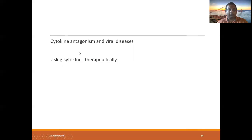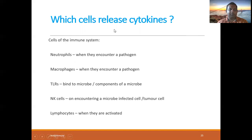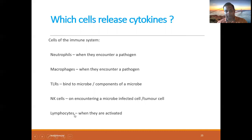Cytokine antagonism plays a role in viral disease, and cytokines can be used therapeutically. Which cells release cytokines? Cells of the immune system — neutrophils when they encounter a pathogen, macrophages when activated, toll-like receptors binding to microbes and components of microbes trigger formation of neutrophils and macrophages with cytokine formation. NK cells encounter microbe-infected cells and tumor cells. Lymphocytes when activated also release cytokines.